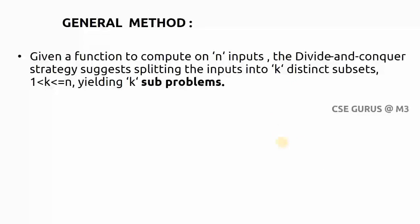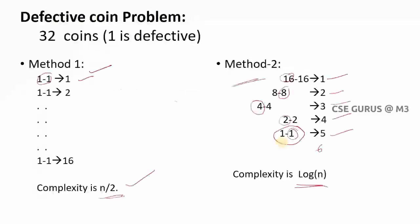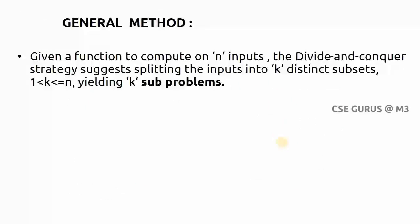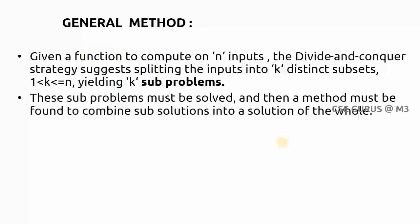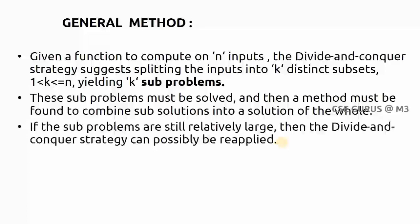Theoretically, given a function to compute on n inputs — like 32 coins — the divide and conquer strategy splits the inputs into k distinct subsets, yielding k sub-problems. In our example, we divided into two subsets of 16 and 16. These sub-problems must be solved, and a method must be found to combine the sub-solutions into a complete solution.